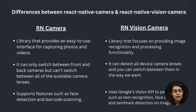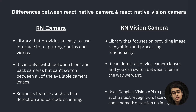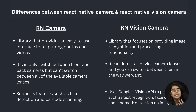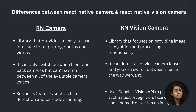React Native Camera is a library that provides an easy-to-use interface for capturing photos as well as videos. Whereas in React Native Vision Camera, the library focuses on providing image recognition and processing functionality too. In React Native Camera you can only switch between the front and back camera — even if there are many lenses, it won't detect them. But in React Native Vision Camera, it detects all available device lenses and you can switch between them.